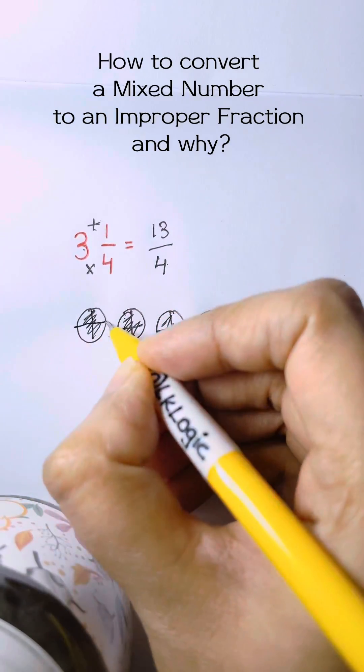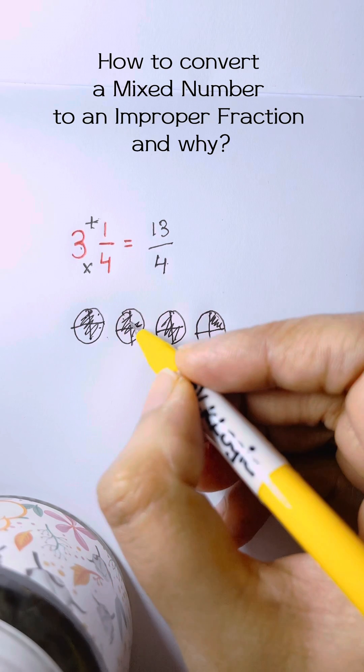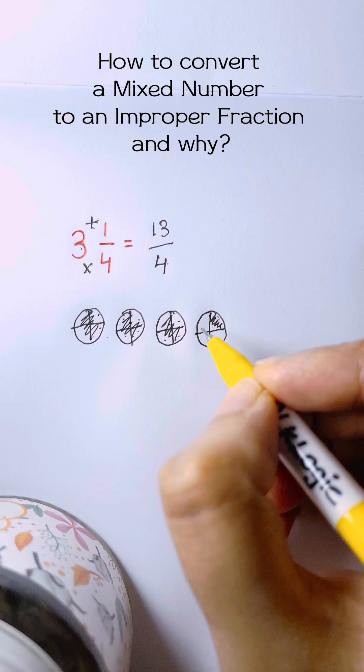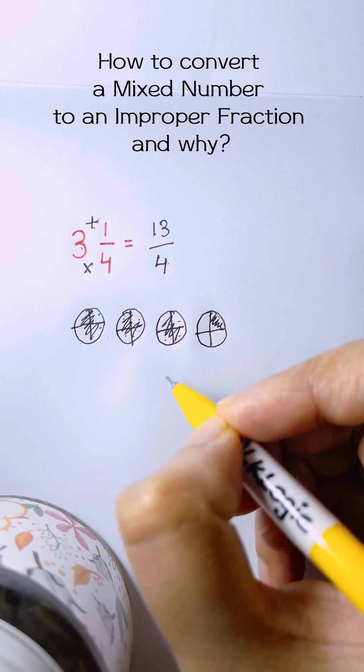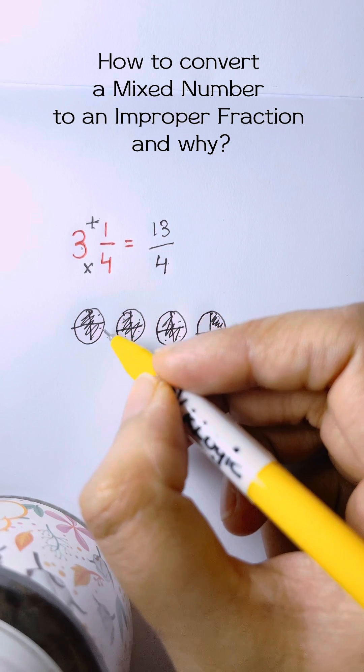And then you just simply count the total number of parts shaded. 1, 2, 3, 4, 5, 6, 7, 8, 9, 10, 11, 12, 13. And that's how we have 13 in the numerator because that represents the total number of parts shaded.